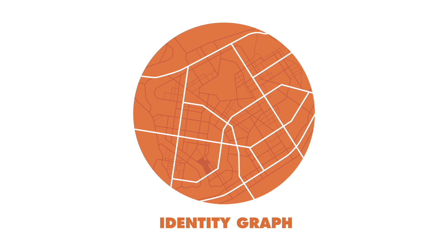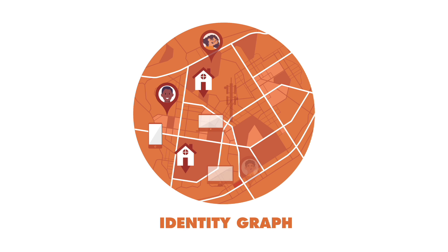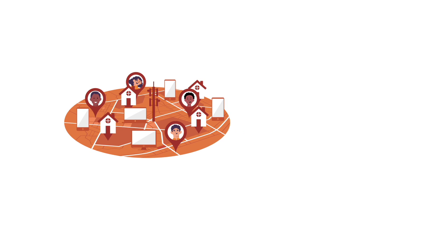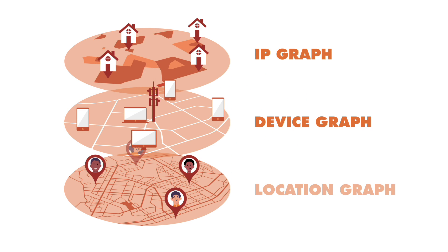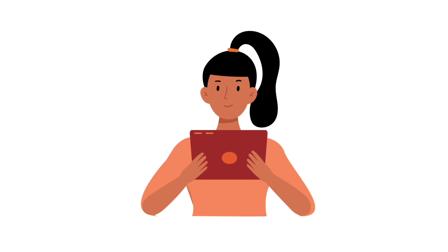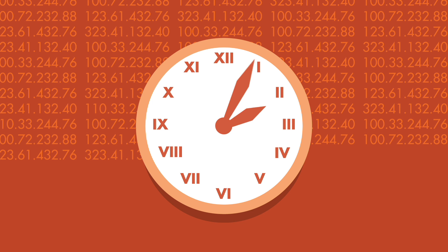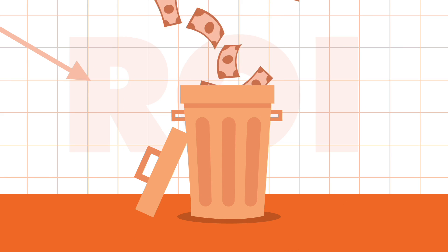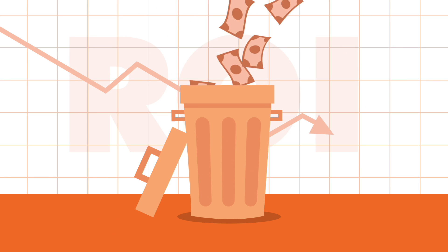Omni is the strongest data backbone in the industry, ready to match your existing data points. And if you don't need our entire Identity Graph, we also offer three major component graphs. Omni makes reaching audiences across any and all types of connected devices easier than ever. Our real-time updates stay ahead of constantly changing IP addresses, making sure you aren't wasting valuable ad spend on outdated information.